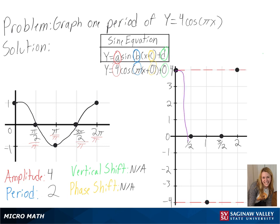And with that, we have graphed one period of y equals 4 cosine of pi x.